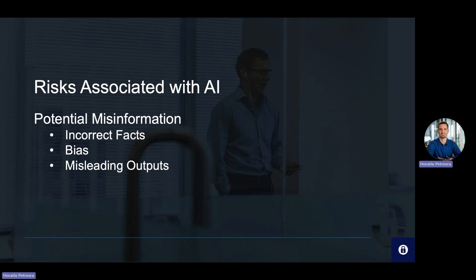Large language models compile text convincingly, but they do not understand what they have created. Hence, the inherent nature of LLMs can lead to incorrect facts. LLMs can sometimes generate plausible but inaccurate information, because services like ChatGPT are designed to create grammatically correct compilations of text based on predicting what word should come next in a sentence. It can also lead to bias — the data used to train these models can introduce biases, leading to skewed outputs and causing issues where understanding decision-making processes is important. And LLMs can generate misleading outputs, as they can be easily misled and are often gullible, especially with leading or loaded questions.